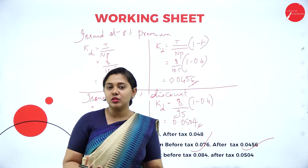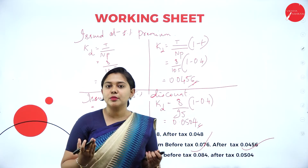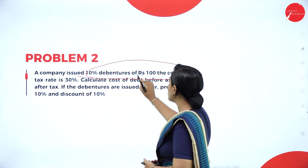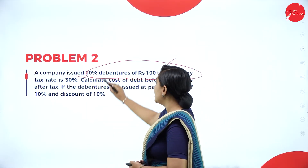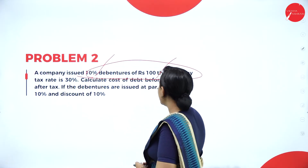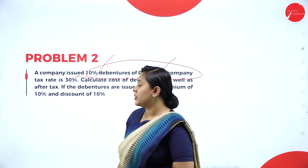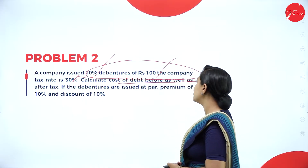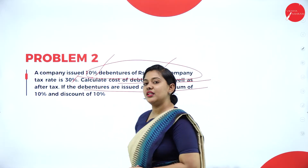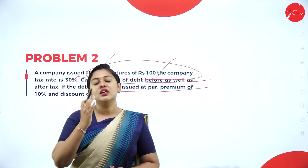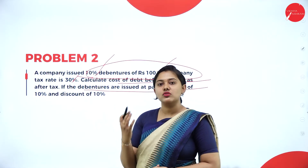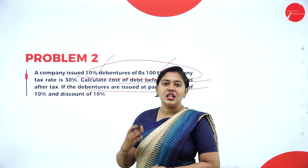Moving forward, for more clarity let us take up one more problem. Problem number 2: a company issued 10% debentures of Rs. 100 each — Rs. 100 will be the net proceeds and 10% will be the interest, so Rs. 10 is the interest. Tax rate is 30%, so 0.30 will be the tax rate. Calculate the cost of debt before and after tax if the debentures are issued at par, 10% premium, and 10% discount.